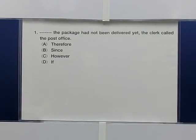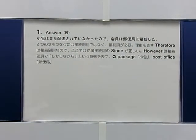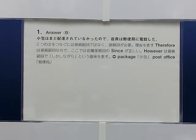練習問題 No.1. The package had not been delivered yet. [blank] the clerk called the post office. A. Therefore  B. Since  C. However  D. If. The answer is B. 小包みはまだ配達されていなかったので、店員は郵便局に電話した。2つの文をつなぐには接続副詞ではなく接続詞が必要。理由を表すThereforeは接続副詞なのでここでは従属接続詞のSinceが正しい。Howeverは接続副詞で「しかしながら」という意味を表す。Package（小包み）、post office（郵便局）。